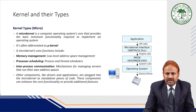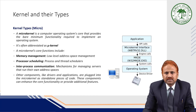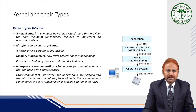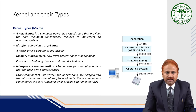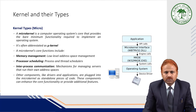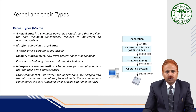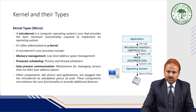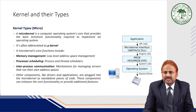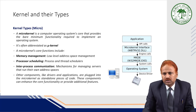Another prevalent type of kernel is known as the microkernel. A microkernel is a computer operating system's core that provides the bare minimum functionality required to implement an operating system, often abbreviated as microkernel. A microkernel's core functions include memory management, process management, and inter-process communication. Other components like drivers and applications are plugged into the microkernel as standalone pieces of code, which can enhance core functionality or provide additional features. Through API calls, various DLL or EXE files, known as system calls, call components of the operating system which directly interact with the hardware.